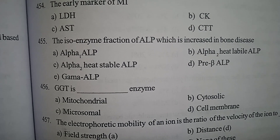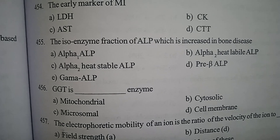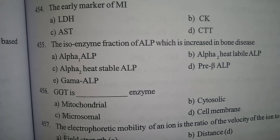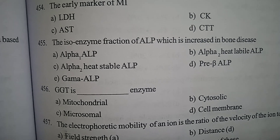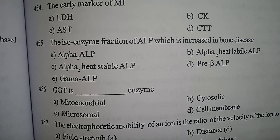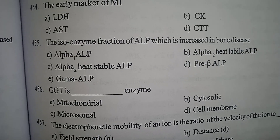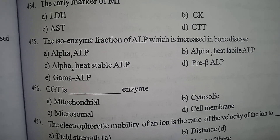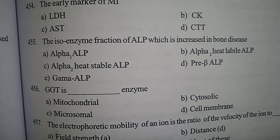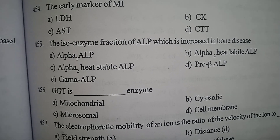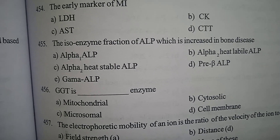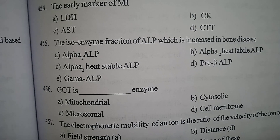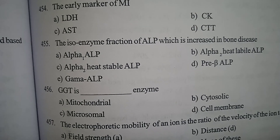Question 11: GGT is a — enzyme. Option A: Mitochondrial, Option B: Cytosolic, Option C: Microsomal, Option D: Cell membrane. Correct answer: Microsomal.